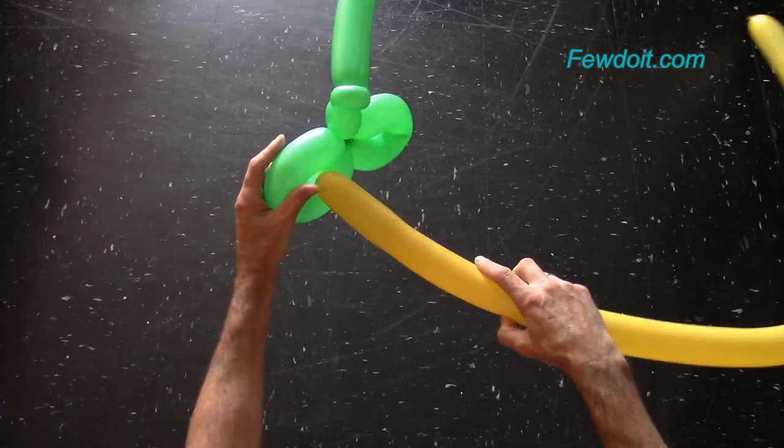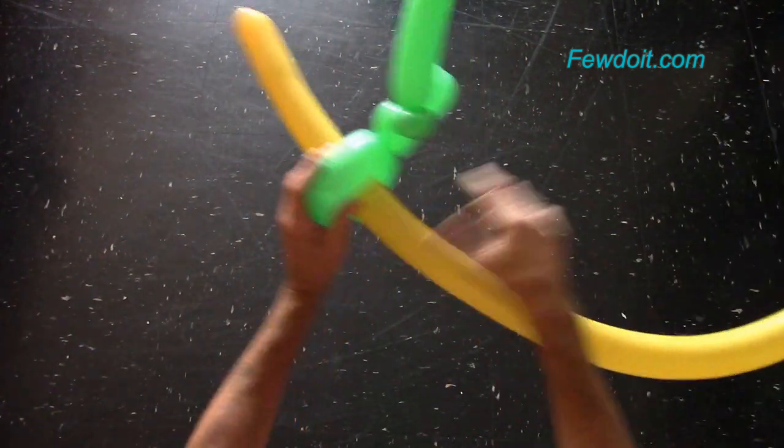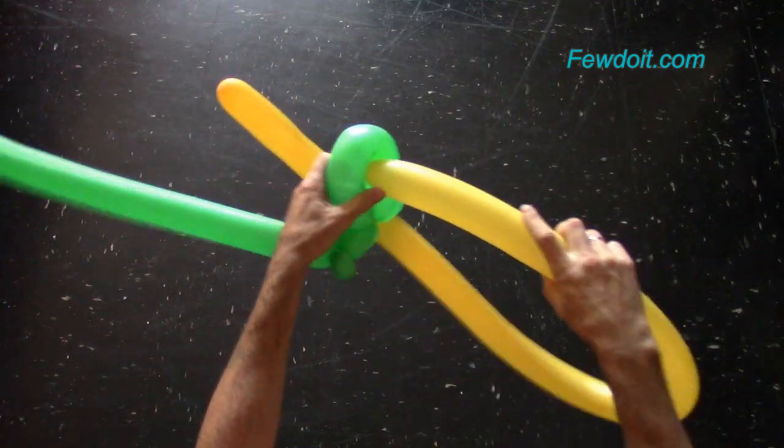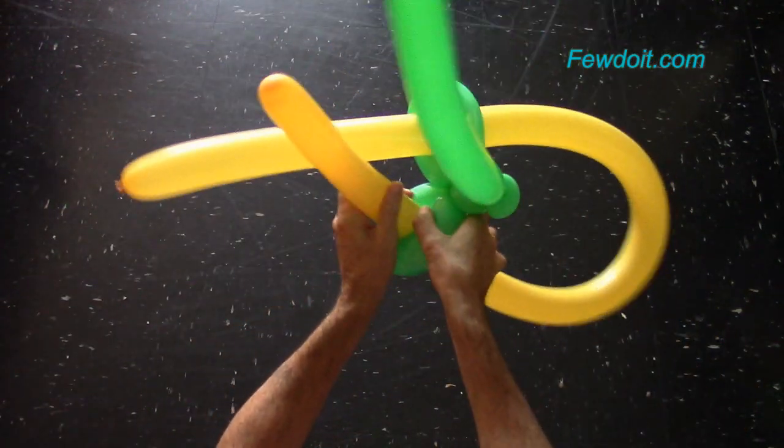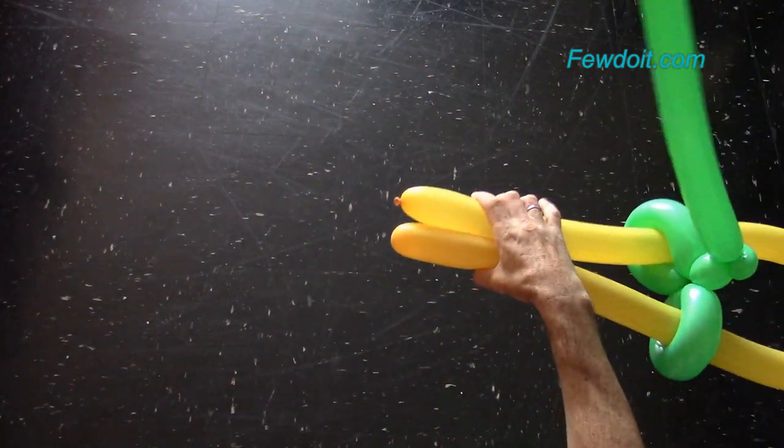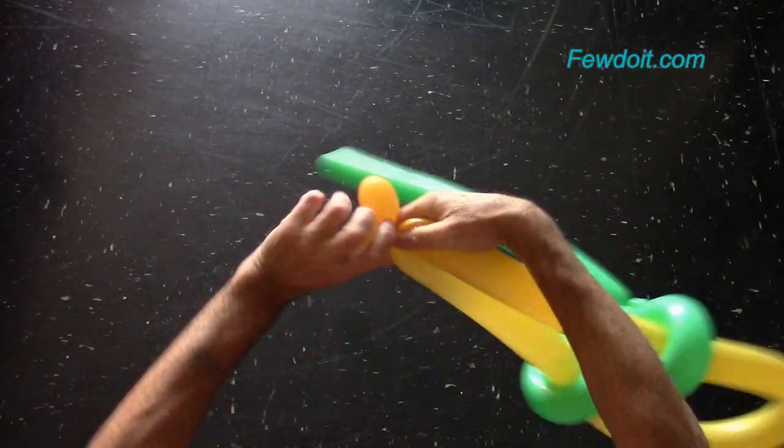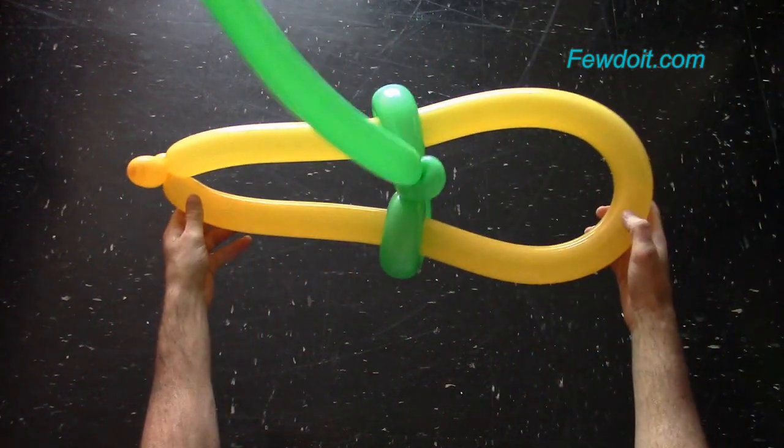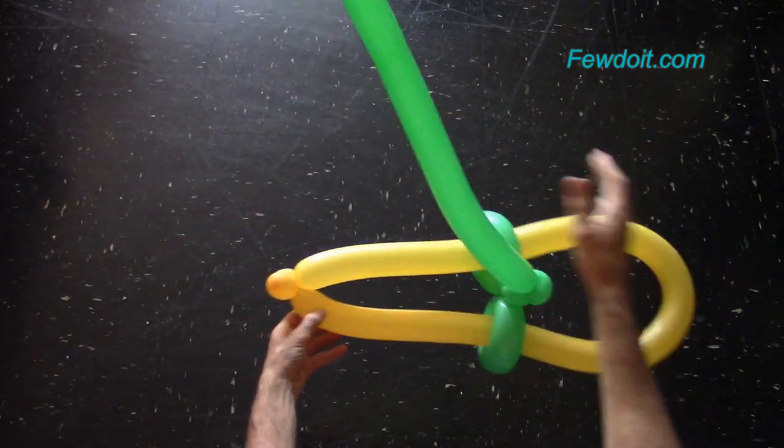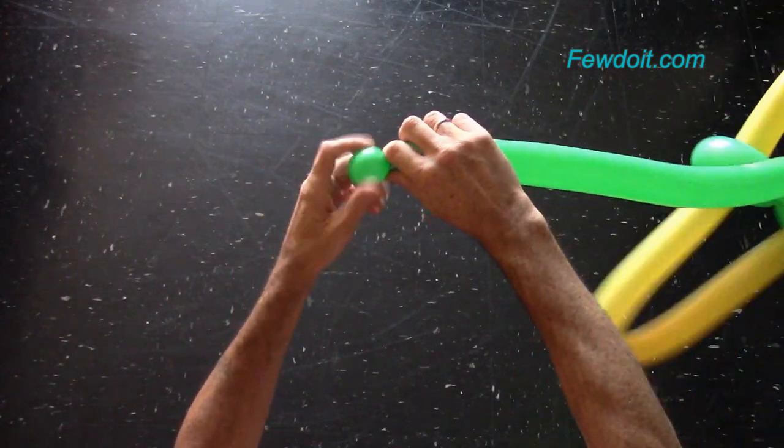Fully inflate the yellow balloon leaving no flat tails. Force one end of the yellow balloon through the loop of the first green bubble. Force the other end of the yellow balloon through the loop of the second green bubble. Now we have to tie both ends of the yellow balloon in one knot. For convenience I made small bubbles at the end of the yellow balloons and locked them in one lock twist.